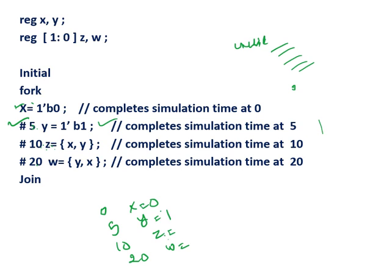Don't mix this up with sequential design. It is not like 0, then 5, then 5+10=15, then 15+20=35. That would be sequential. This is a parallel block, so delays are all relative to the start of the fork block.